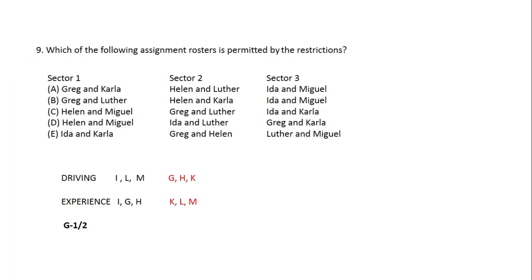Which of the following assignment rosters is permitted by the restrictions? We check each option. The driving program members are I, L, M — each team must include one of them. Option A shows a team with G, R, K, which has no driver-trained paramedic. Checking options A, B, D, E similarly fail. So the answer is option C.